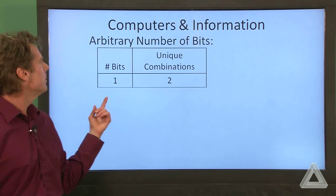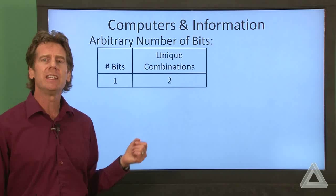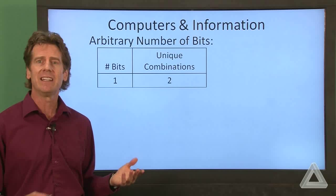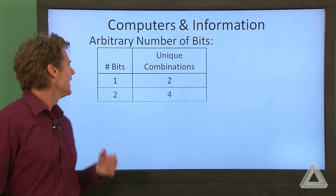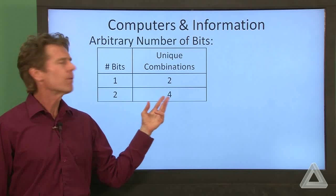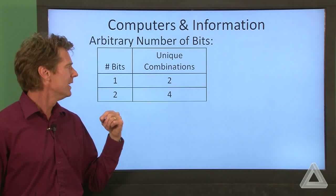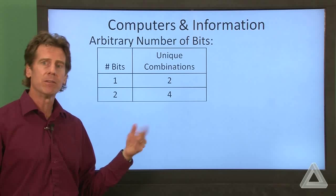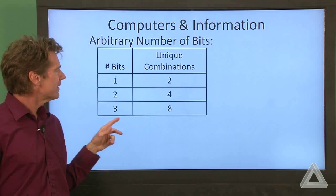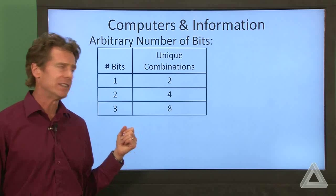So as a refresher, with one bit we saw that there were two unique combinations. That one bit could be either zero or one. If we have two bits, there are four unique combinations. We had what we had with one bit, but now we could tack on a zero or a one. If we go to three bits, we have eight unique combinations.